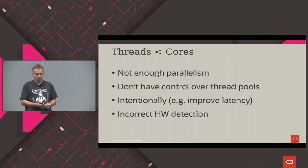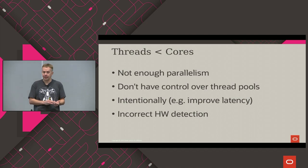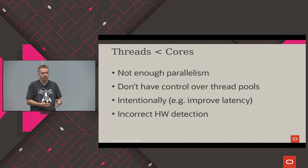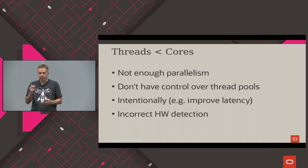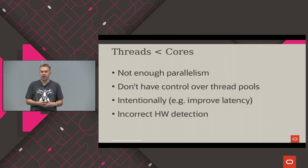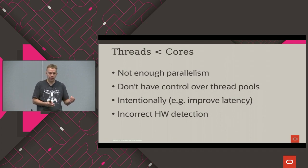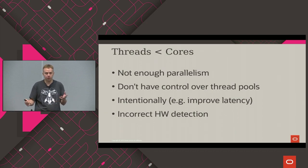When threads are fewer than cores, your application simply doesn't have enough parallelism. We often use third-party libraries and frameworks with thread pools inside that we have no control over — that's bad. Sometimes systems are deliberately underutilized to improve latency, which makes sense for some cases. And sometimes we just detect our hardware incorrectly — we thought it was 8 cores but it was 64, et cetera.